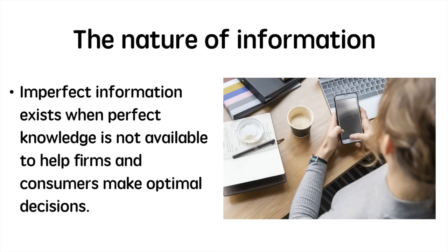Imperfect information exists when perfect knowledge is not available to help firms and consumers make optimal consumption and production decisions. This could be the case of information that is missing that gives a firm a competitive advantage against another. It could also be an information asymmetry that results from one party having greater information in an economic exchange.